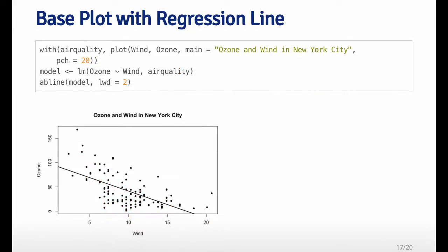Finally, one common thing that you will typically want to do is to add a regression line or a smoother to a plot. So here I just added a regression line to the same scatter plot. So I first make the scatter plot, and you can notice I've changed the default plotting character, PCH, to be 20. So 20 is a kind of small, filled-in circle.